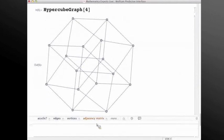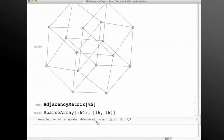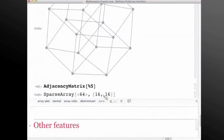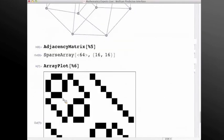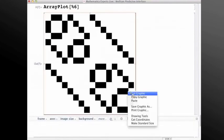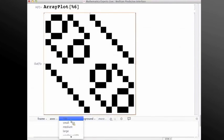And let's take a look at its adjacency matrix. So this is a sparse array. Let's see, let's try to visualize that array a little bit, get a sense of what it looks like with ArrayPlot. Okay, that's a little big for my screen. Let's make it a little smaller.